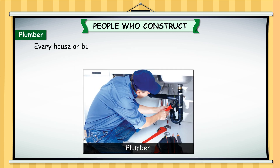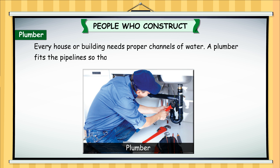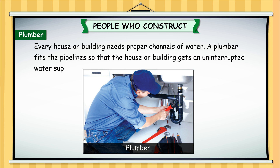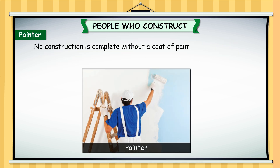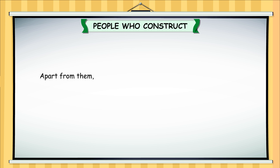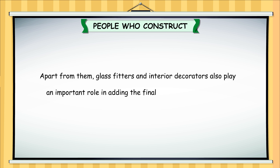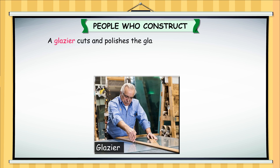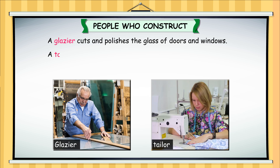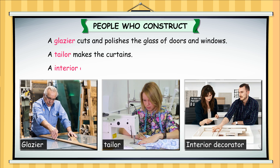Every house or building needs proper channels of water. A plumber fits the pipelines so that the house or building gets an uninterrupted water supply. No construction is complete without a coat of paint — a painter paints the houses, buildings and bridges. Apart from them, glass fitters and interior decorators also play an important role in adding the final touch to a construction. A glazier cuts and polishes the glass of doors and windows. A tailor makes the curtains. An interior decorator decorates the interior of the house.